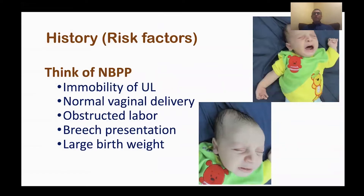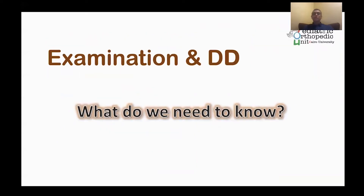We have to think of Brachial Plexus Palsy if there is neonatal, immediate postpartum immobility of the upper limb in a patient with a history of vaginal delivery, difficult labor, obstructed labor, large birth weight, or breech presentation. Presence of difficulty of labor and this capital secundum is indicative of obstructed labor, and should point to Brachial Plexus Palsy if there is immediate immobility of the upper limb.